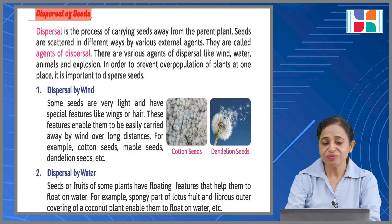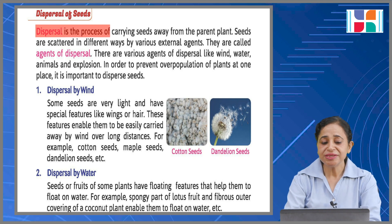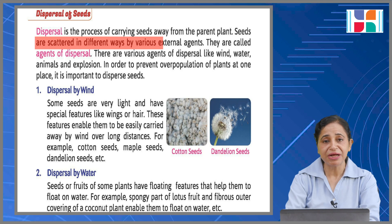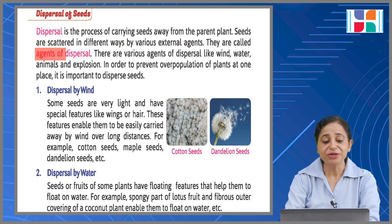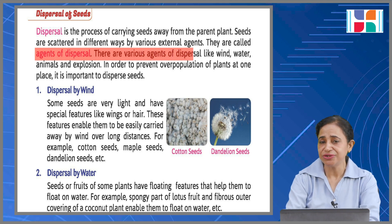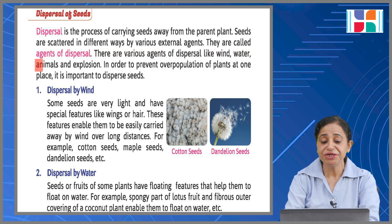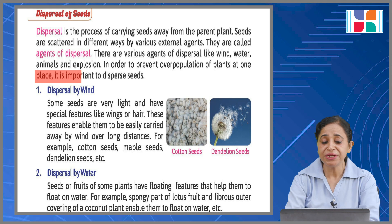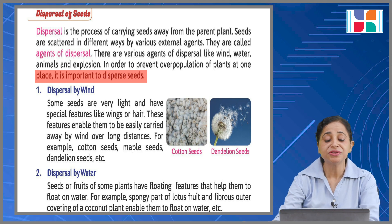Dispersal of seeds: dispersal is the process of carrying seeds away from the parent plant. Seeds are scattered in different ways by various external agents, called agents of dispersal. There are various agents of dispersal like wind, water, animals, and explosion. In order to prevent overpopulation of plants at one place, it is important to disperse seeds.